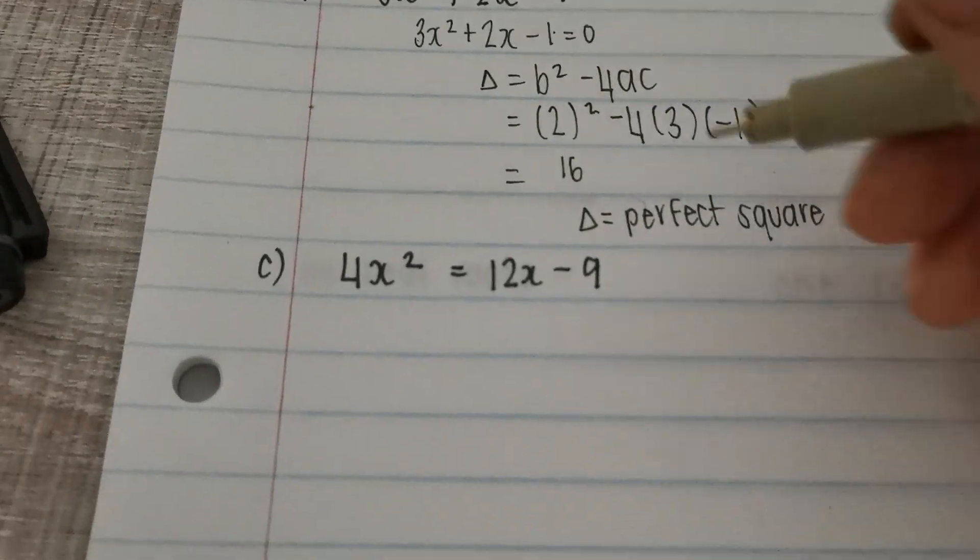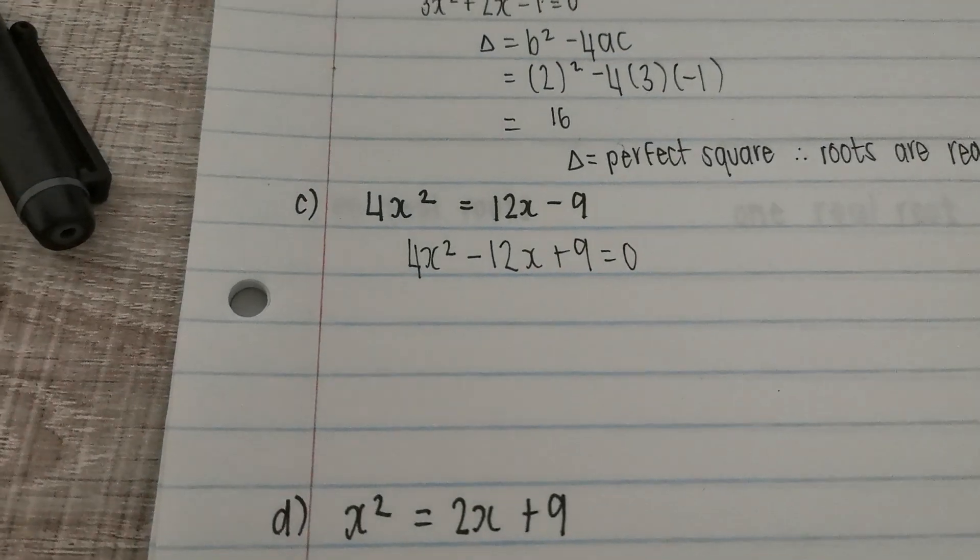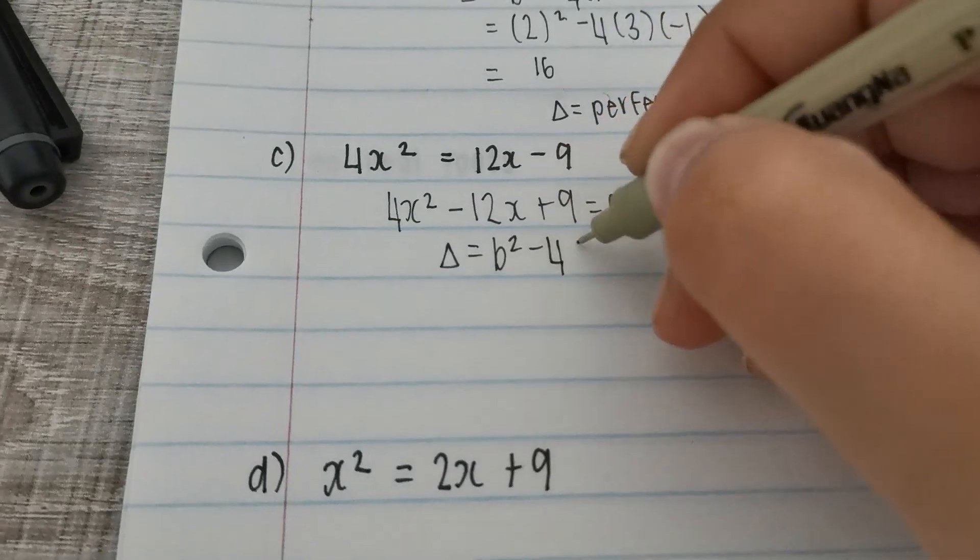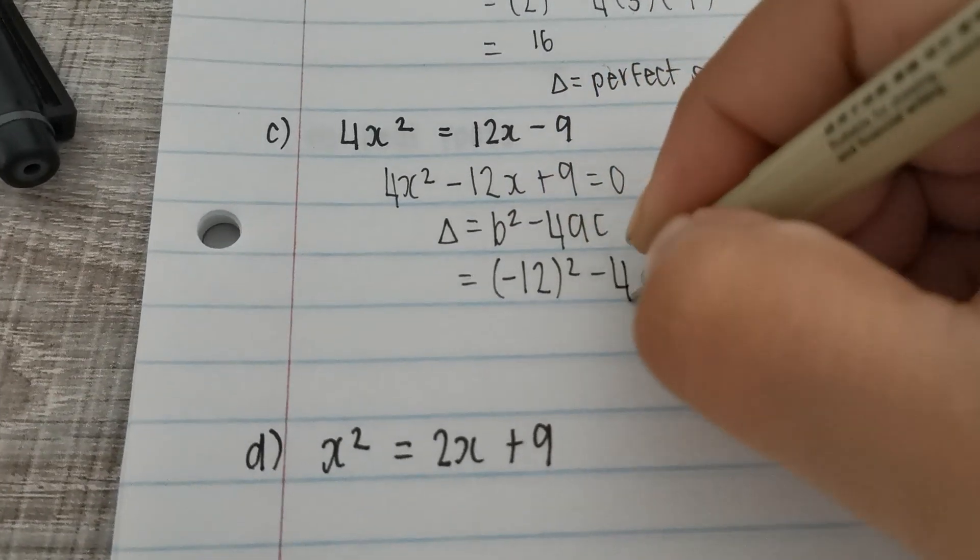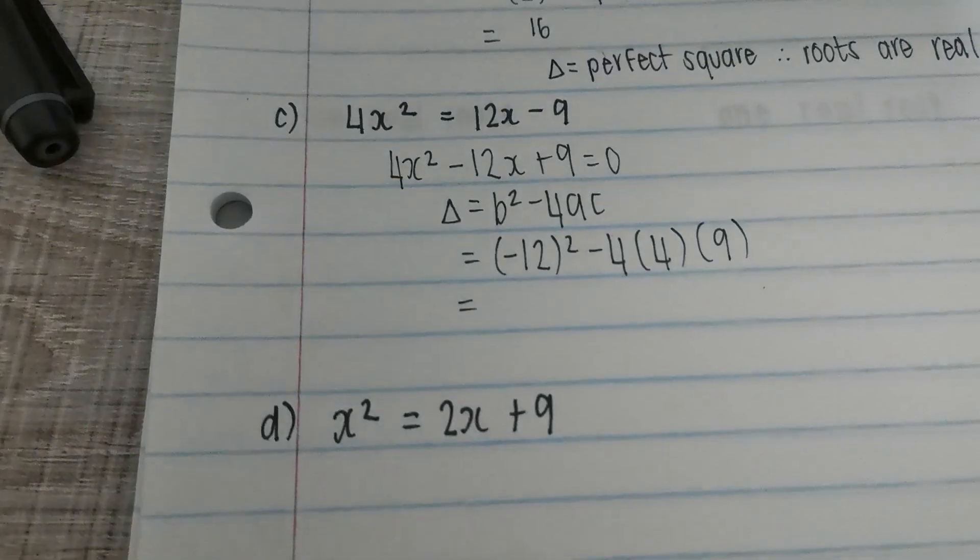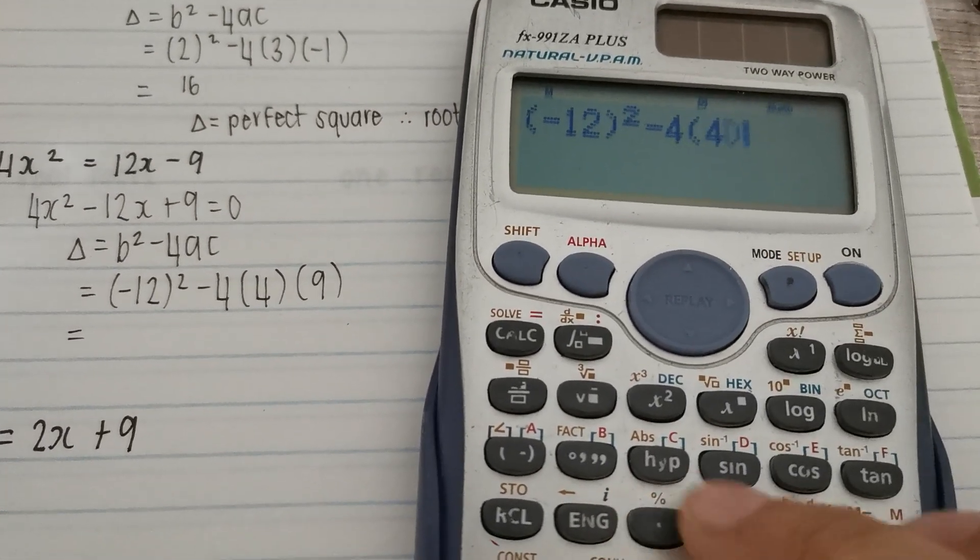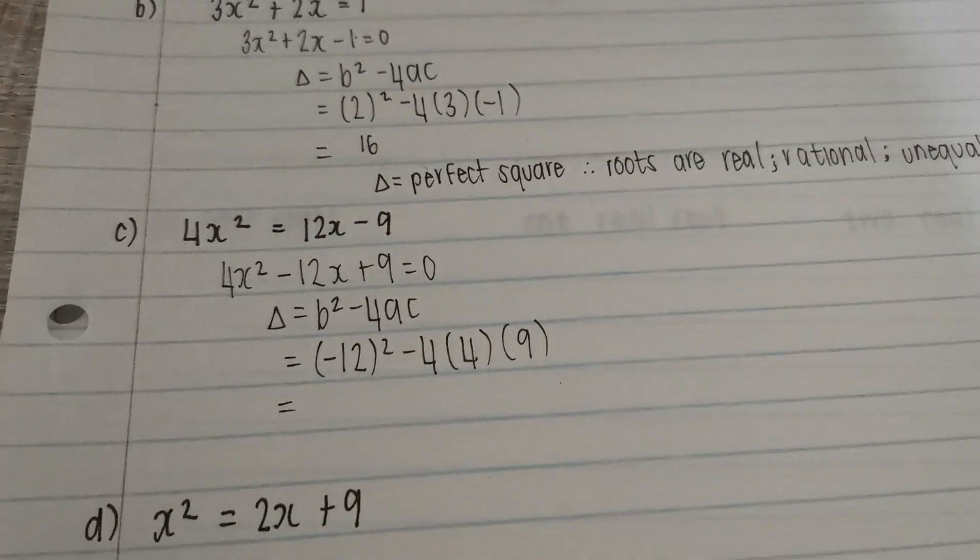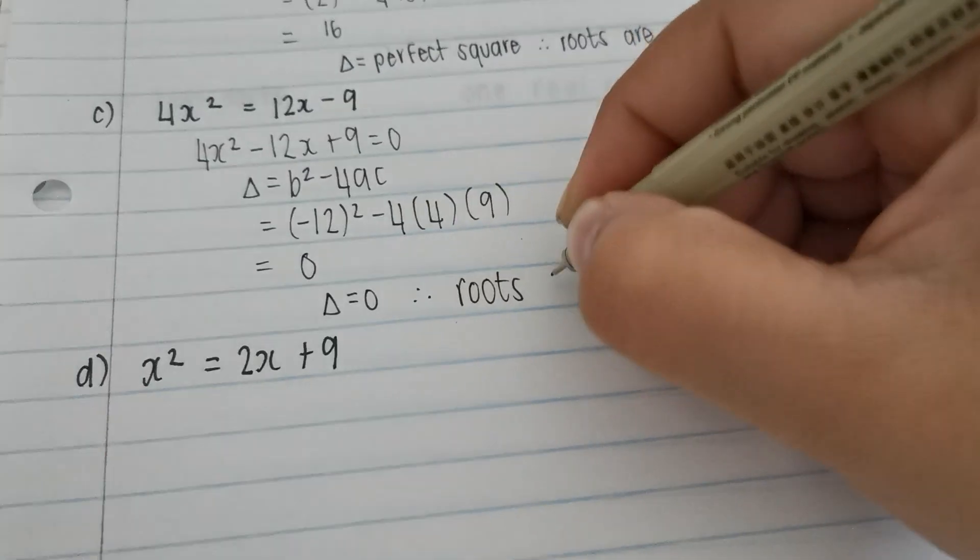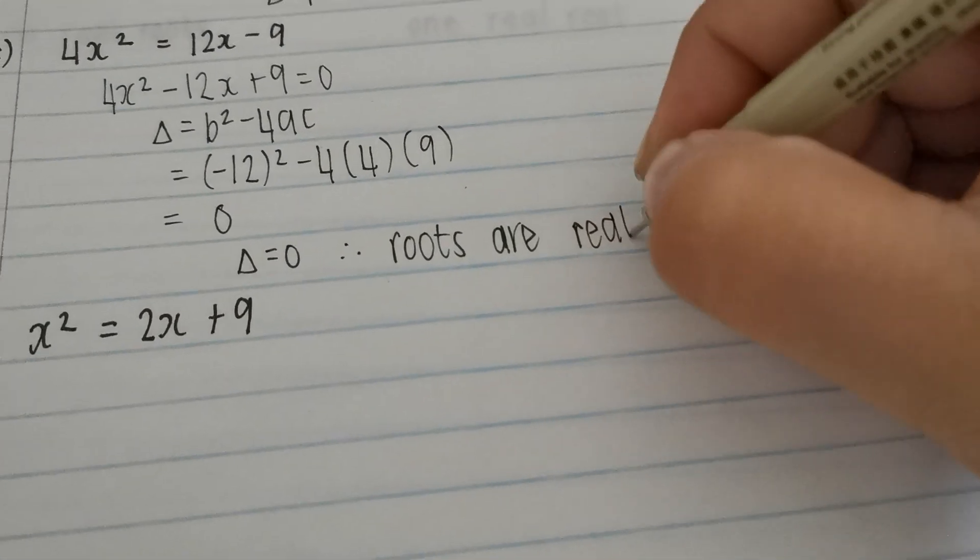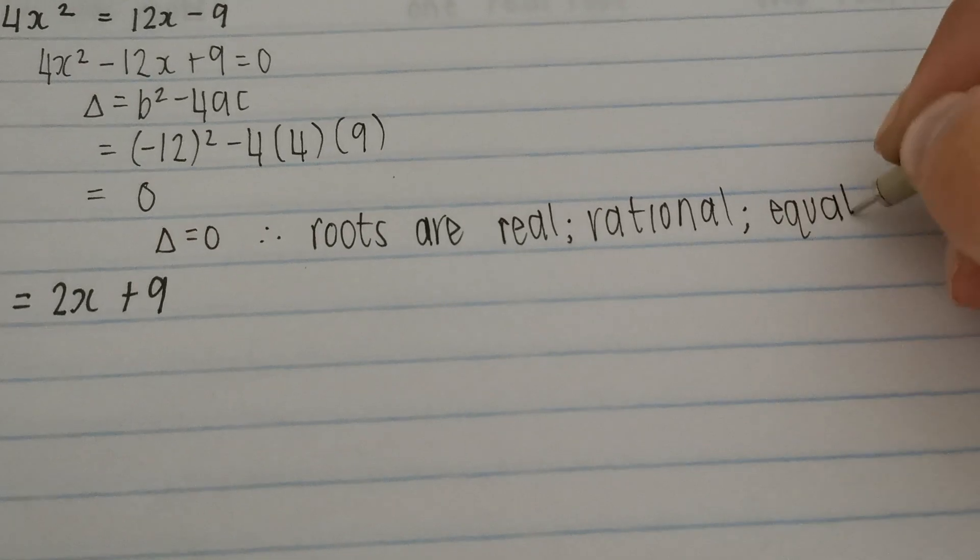Next one, I want it in standard form. So I just took everything to the other side. Discriminant. Subbing b value, a value, c value. Gives me zero. If our discriminant is equal to zero, it means roots are real, rational, and this time they are equal.